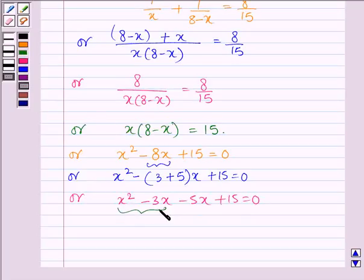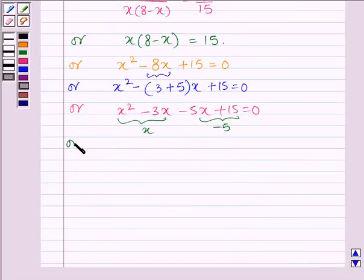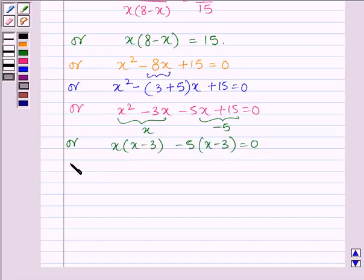Now taking x common from the first two terms and minus 5 from the last two, we have x(x-3) - 5(x-3) = 0, or we have (x-3)(x-5) = 0.